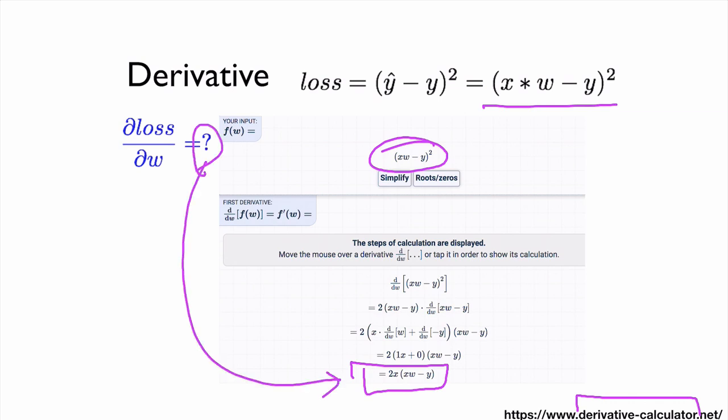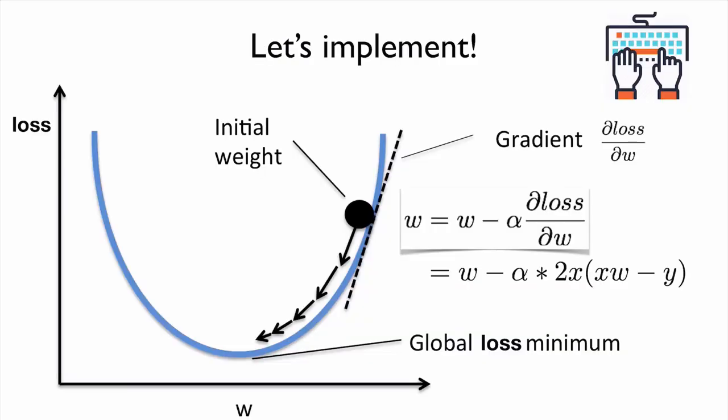And then we can just use, you can plug in this one, and we can really implement it. So let me just summarize it. So W now will be updated using this equation alpha plus 2x times w minus y. This is our gradient.